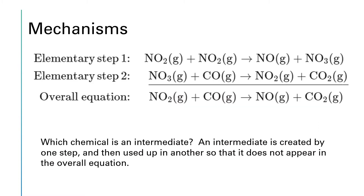A mechanism is a series of steps that shows exactly how the molecules are coming together for an overall reaction to take place. The particular reaction we're looking at is given here by this line that says overall reaction. The net reaction is NO2 reacts with CO to give us NO and CO2. So it looks like we're simply transferring an oxygen atom from the NO2 molecule to the CO molecule. But that's not really how this reaction takes place.